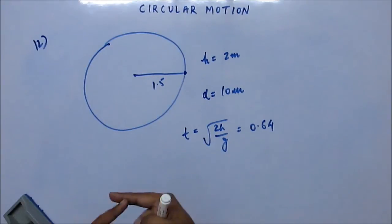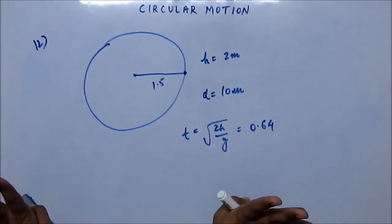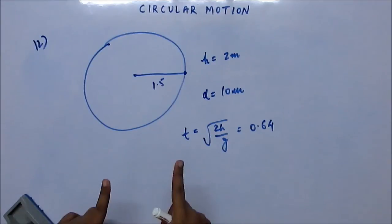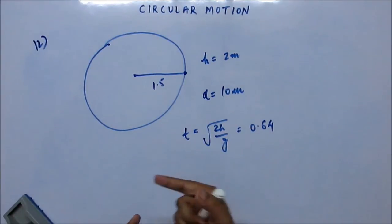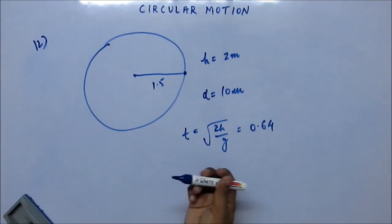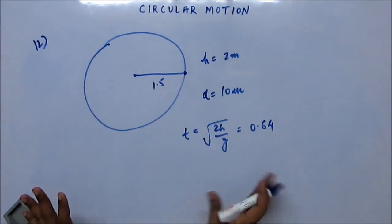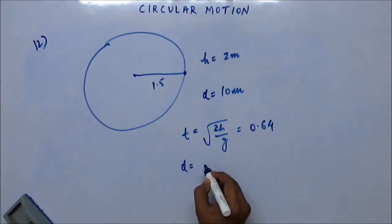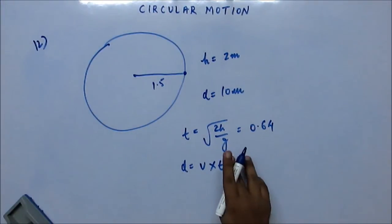Now after the string is cut, it is just Mg which is vertically downward. So in the horizontal direction there is no force. So horizontal velocity is not going to change. So the horizontal distance will be simply horizontal velocity into time.